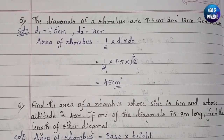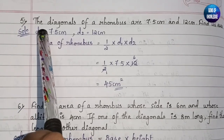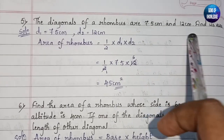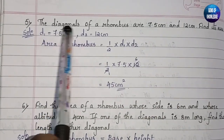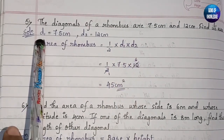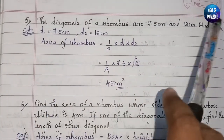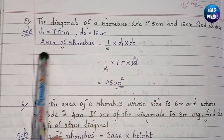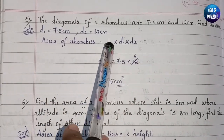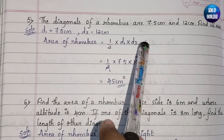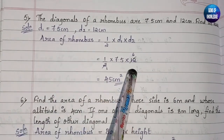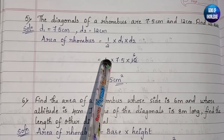The fifth question: the diagonals of a rhombus are 7.5 centimeters and 12 centimeters — find its area. So the first diagonal d1 equals 7.5 cm and d2 equals 12 cm. The formula for area of a rhombus is: Area = half into d1 into d2. Let us substitute: half into 7.5 into 12.